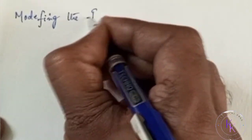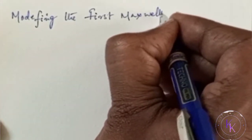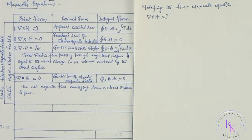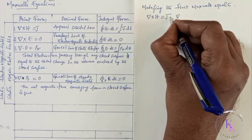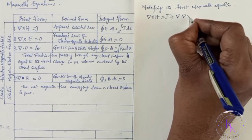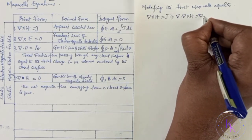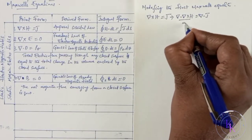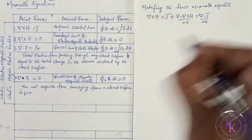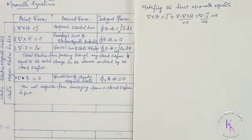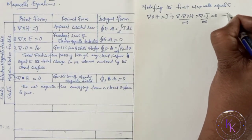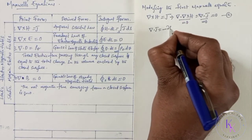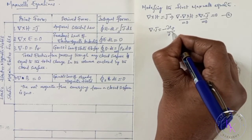Modifying the first Maxwell's equation: we have del cross H equals J in the steady magnetic field case. Taking the divergence on both sides: del dot (del cross H) equals del dot J. Since the divergence of the curl of any vector equals zero, the left side equals zero. According to the continuity equation, del dot J equals minus ∂rho_V/∂t.